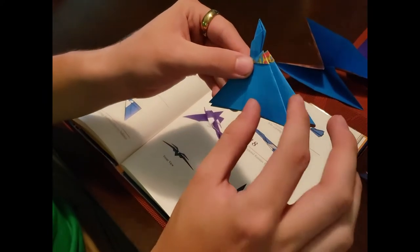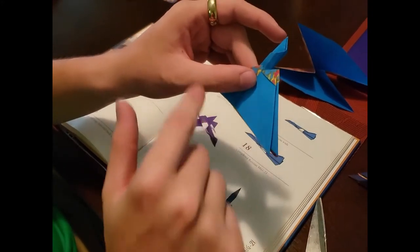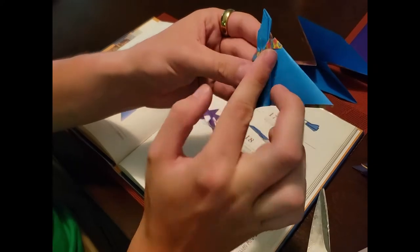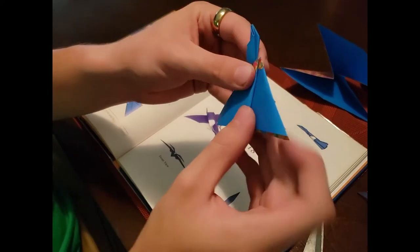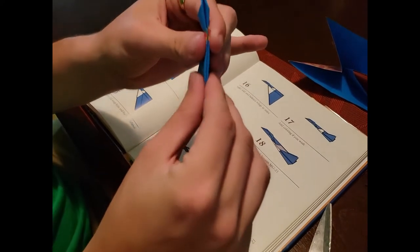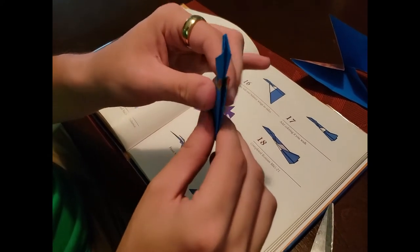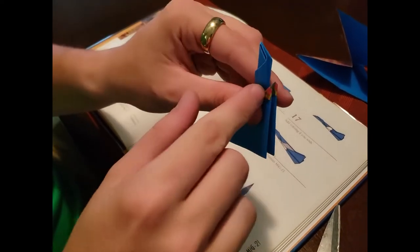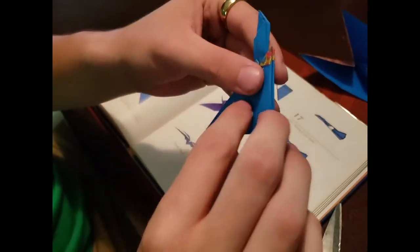Now what you're going to do after that is you're going to take the bigger of the two and you're going to fold it at the tip in half. And then when you do that, you're once again going to fold shortly before the tip.